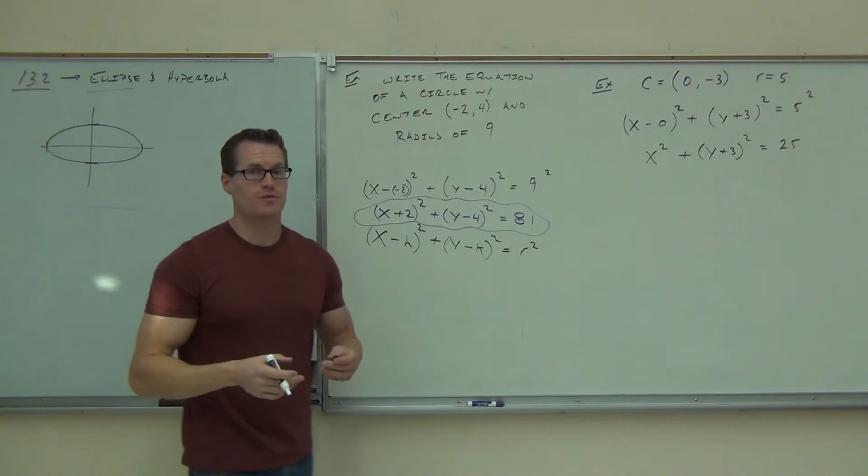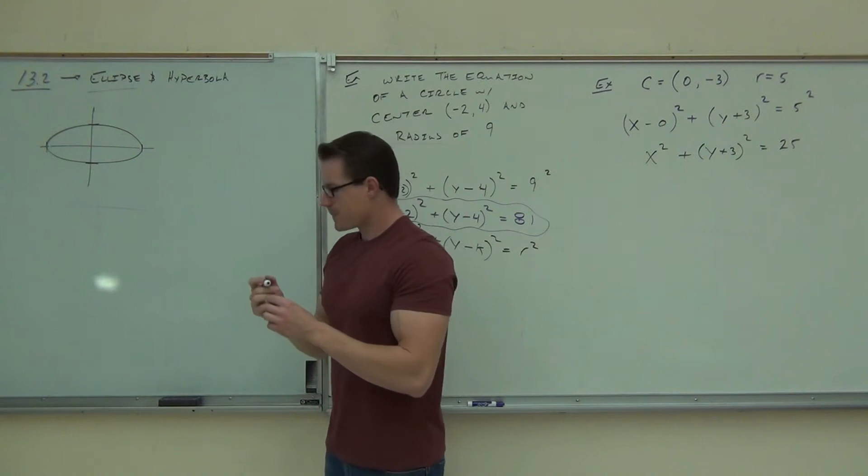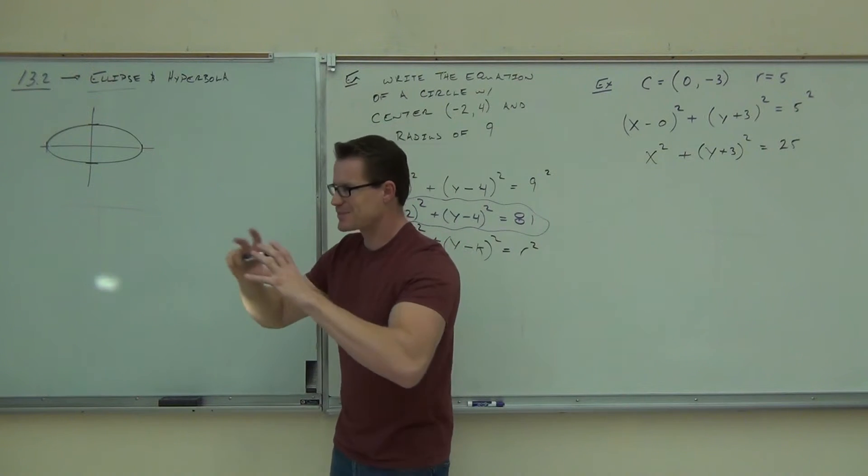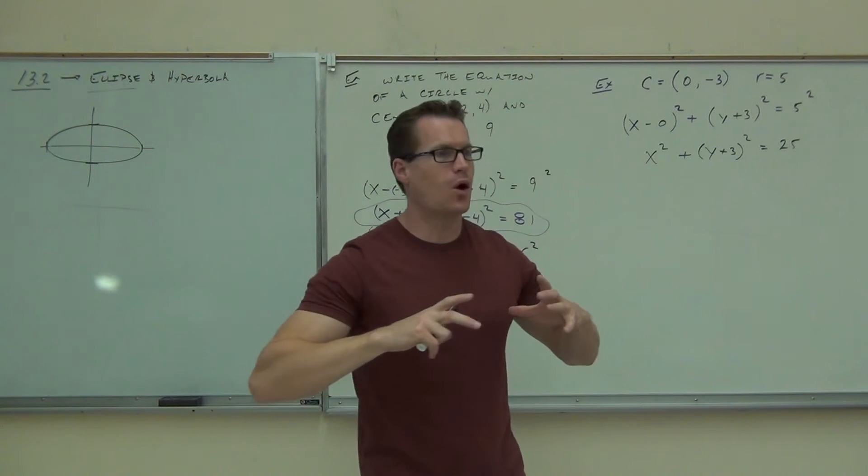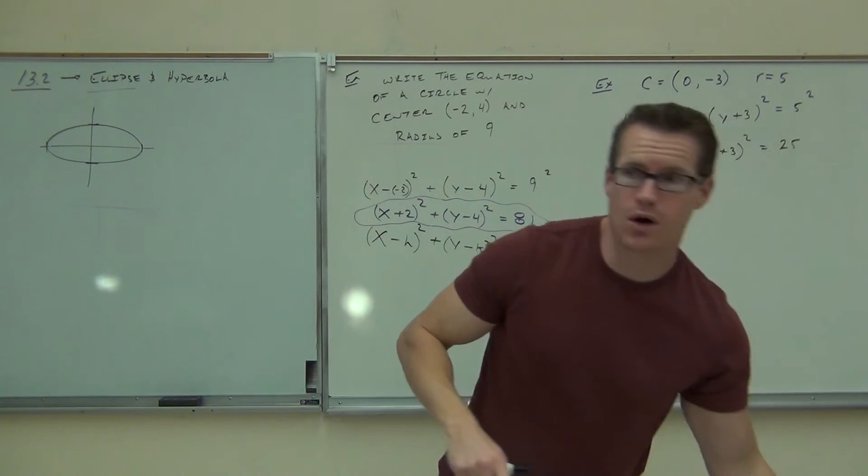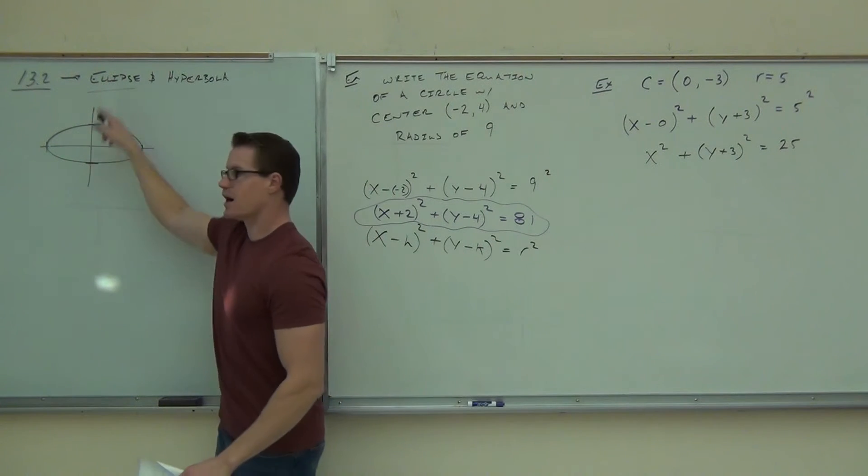That's an ellipse, or very similar to an ellipse. It looks kind of like an oval. It's a smashed circle. It's a circle that's elongated in one direction. It's either elongated lengthwise or heightwise.